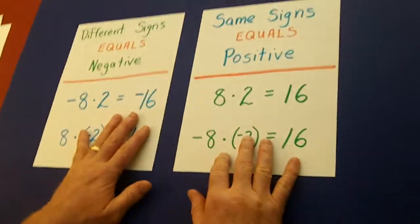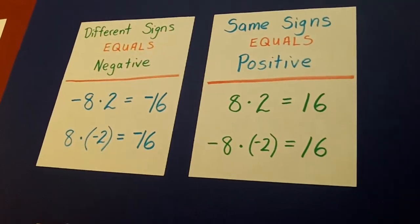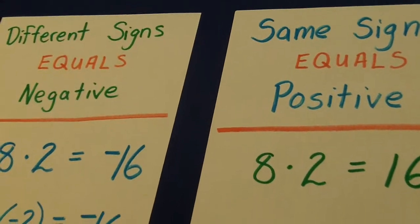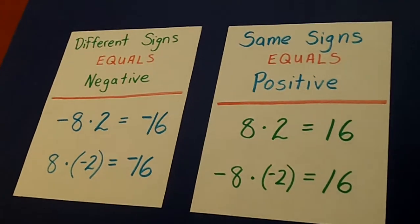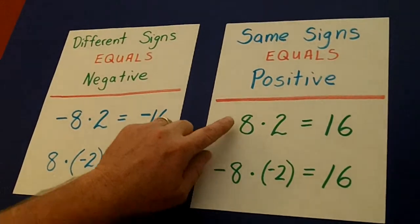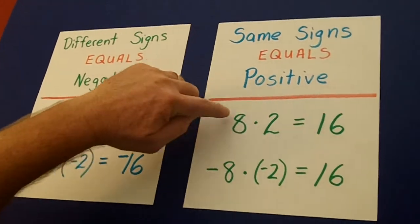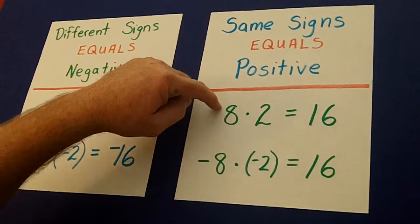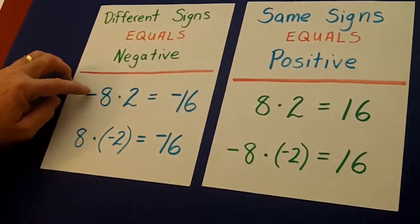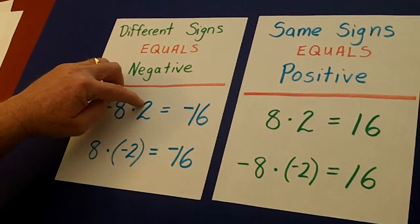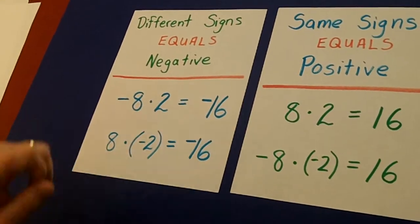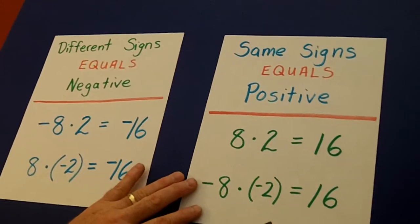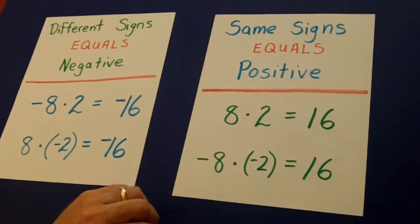Now, the rules here are different than the rules for adding and subtracting — that's a key point. It all depends on whether the signs are the same: like positive 8 times positive 2, or negative 8 times negative 2, where the signs are the same for both numbers. Or whether they're different — like a negative times a positive, or a positive times a negative.